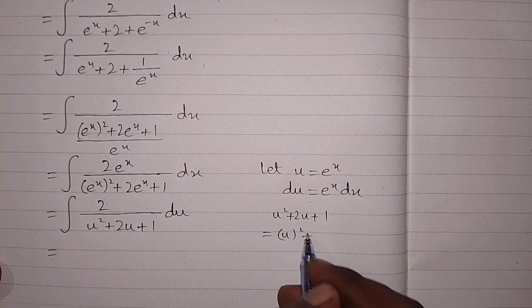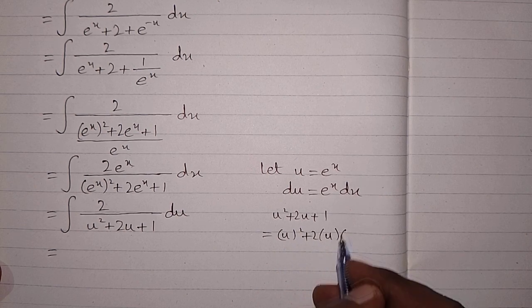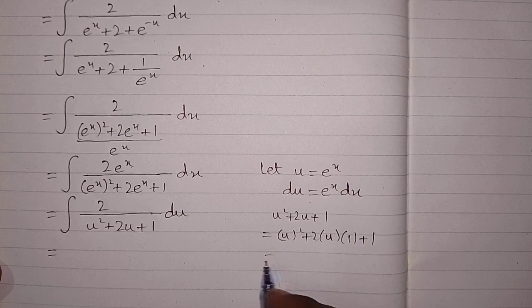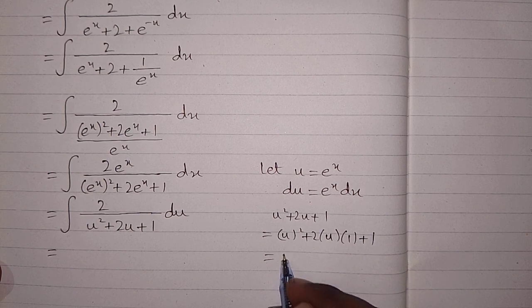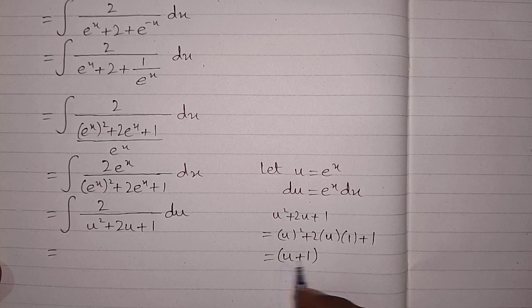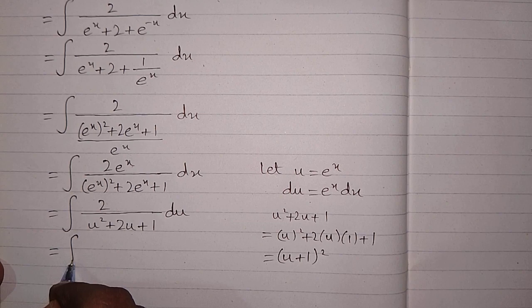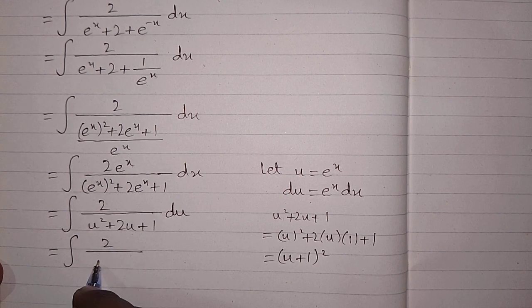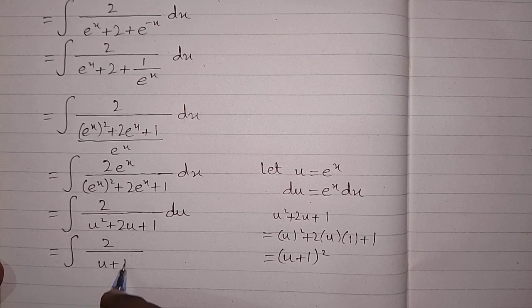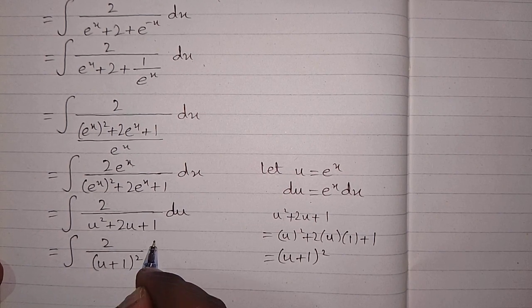Now u squared plus 2u plus 1 can be written using the algebraic identity as u plus 1 whole squared. So we have the integral of 2 upon u plus 1 whole squared, du.